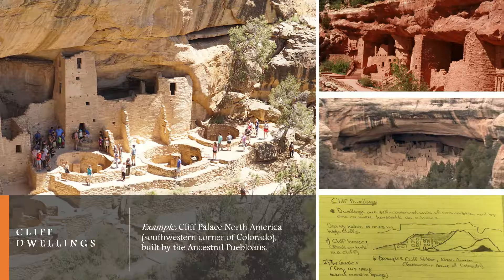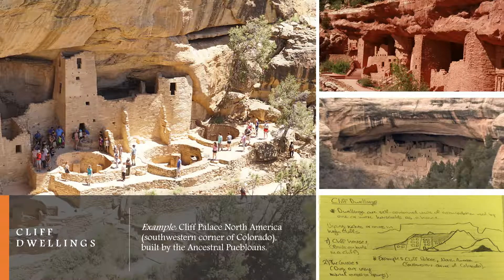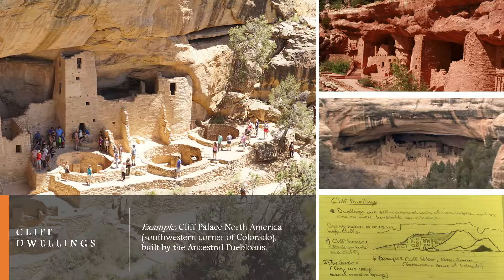Two special types of cliff dwellings were distinguished by archaeologists. The first is a cliff house, which is actually built on ledges in the cliff. And then the cavern, which is dug out by using natural recesses or openings. A famous example of cliff dwellings is the Cliff Palace, which is the largest cliff dwelling in North America, specifically found in the southwestern corner of Colorado. This structure was built by the ancestral Puebloans, and it's located in the Mesa Verde National Park, where it was their former homeland region.